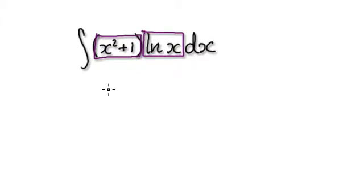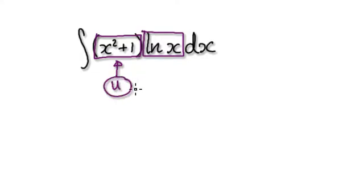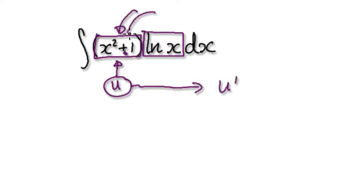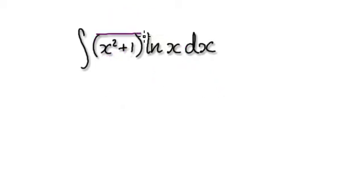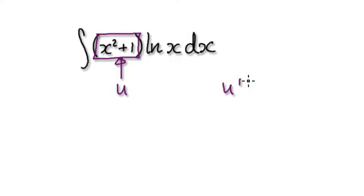When you use integration by parts, your next instinct will tell you to make this to be your u. Because you would have reasoned that if you make this to be your u, later on u prime will become easier and easier. So looking at this, if you differentiate it, it will become easier and easier — your gut instinct will tell you to make this to be your u.